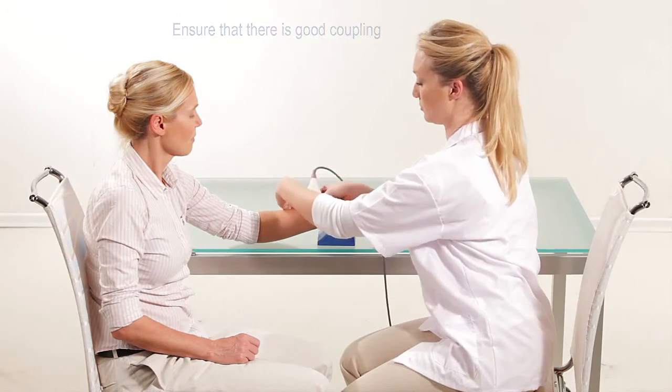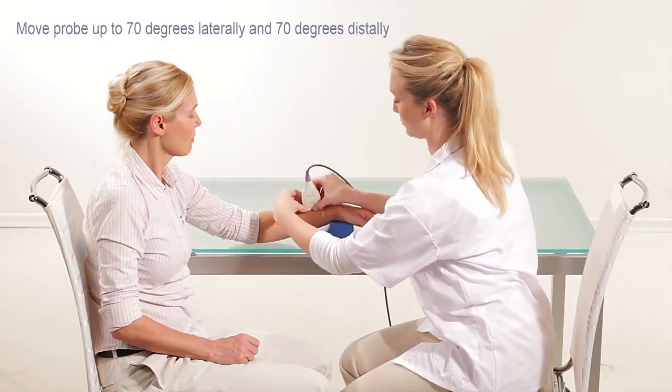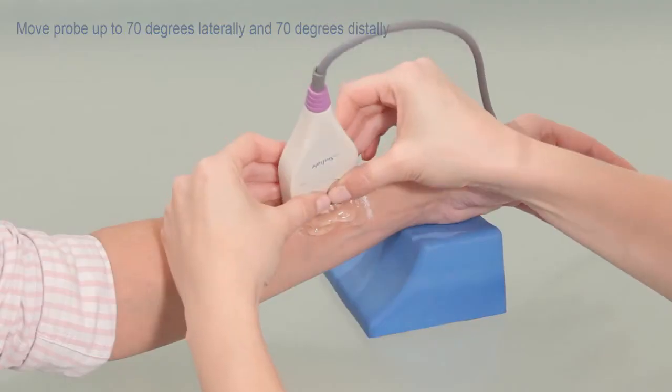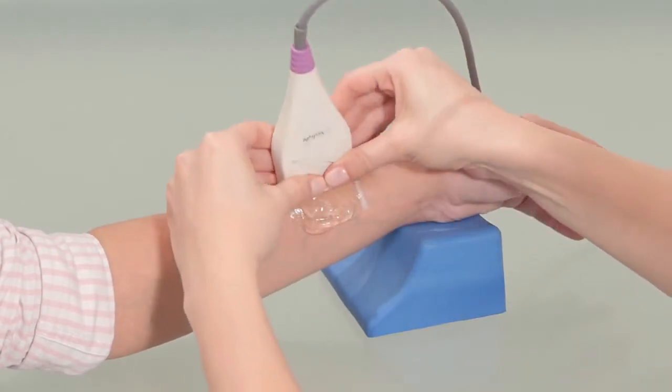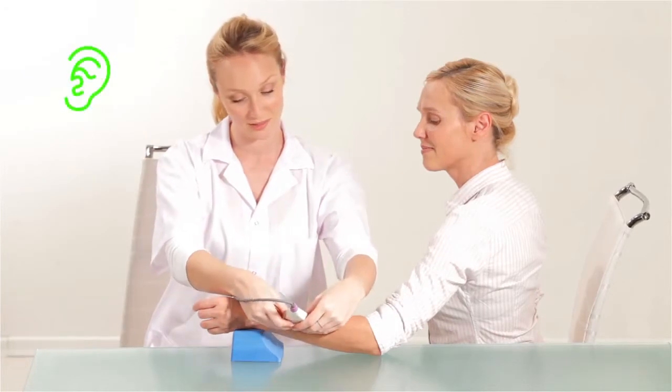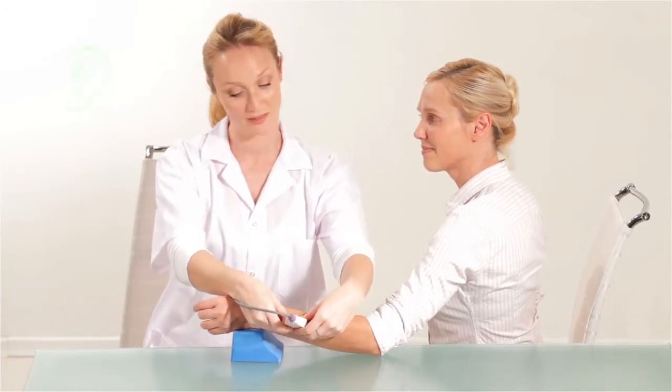Move the probe at a moderate pace up to 70 degrees laterally and then up to 70 degrees distally to scan about 140 degrees of the radius. A beeping sound confirms that you are measuring correctly.